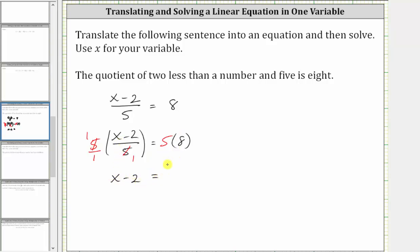On the right side, five times eight is equal to 40. The last step to solve for x is to undo minus two by adding two to both sides of the equation. Simplifying, negative two plus two is zero, giving us x equals 40 plus two is 42.